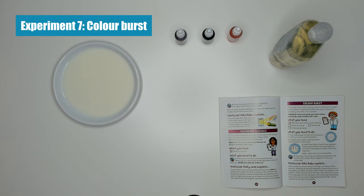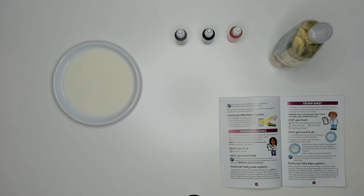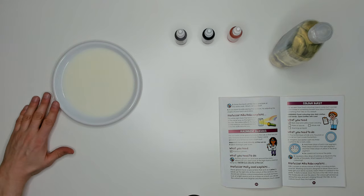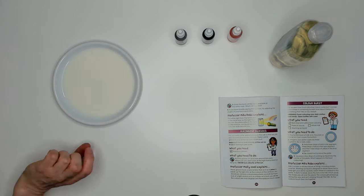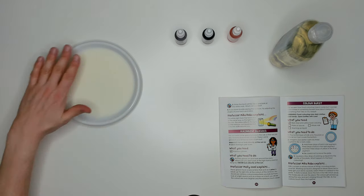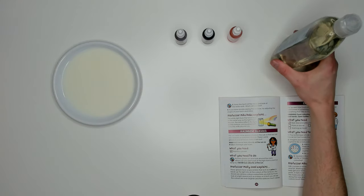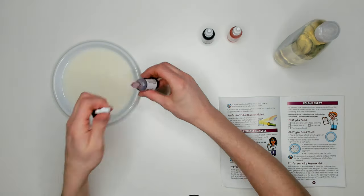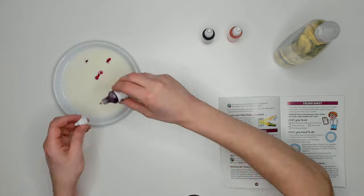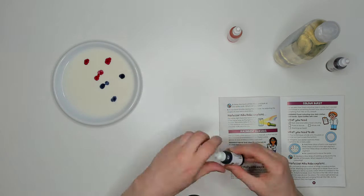The last experiment is the one that I am most looking forward to because I do not know what is going to happen. It's also the experiment that we need the most extra things for. We need a plate with some whole milk in it and some washing up liquid in addition to the three food colorings that come in the kit. First we place a few drops of food color in this pattern into the plate with milk on it.